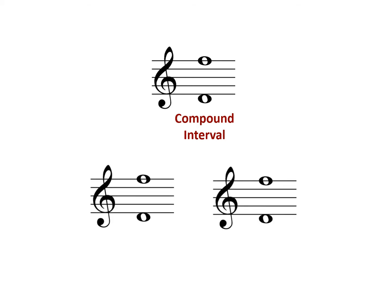To identify a compound interval, it must be reduced to its simplest form, which is within the range of an octave. This can be done by lowering the upper note by one octave, or by raising the lower note by one octave.